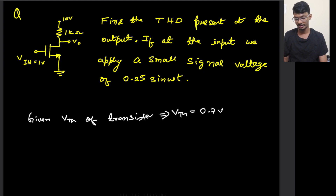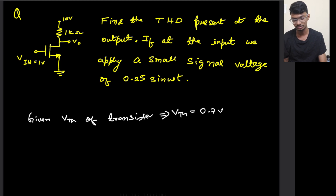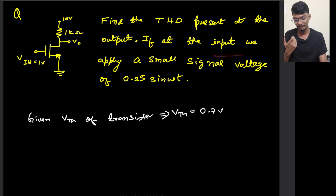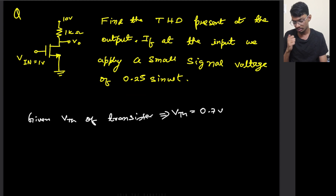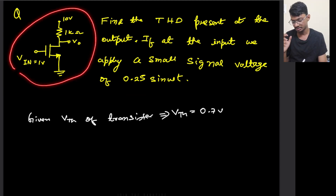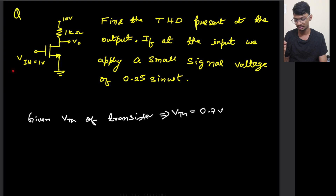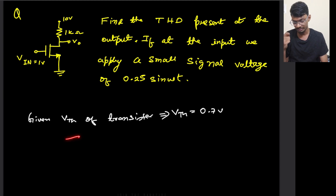We have been given this question in which we need to find the total harmonic distortion present at the output, if at the input we are applying a small signal voltage of 0.125 sin(ωt). The circuit appears to be in saturation, as we have been given a bias voltage for which the MOSFET will be in saturation.